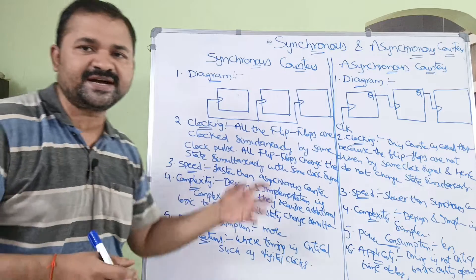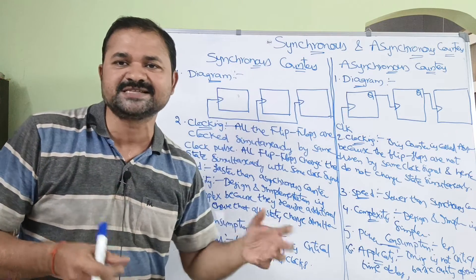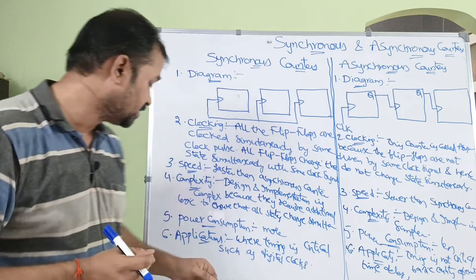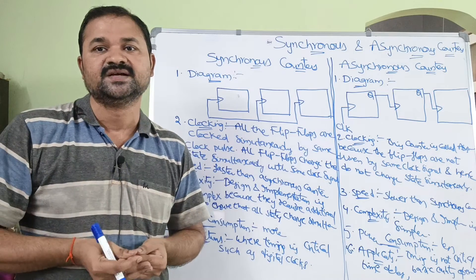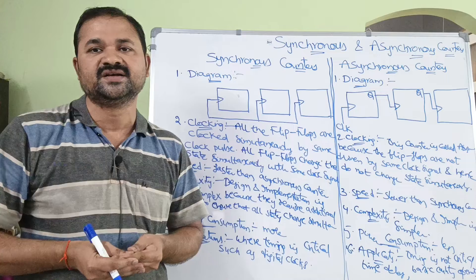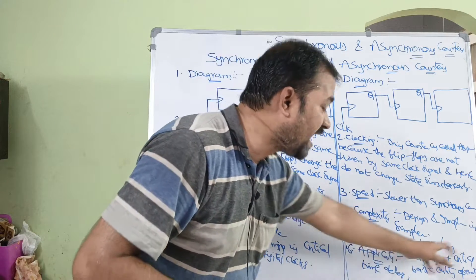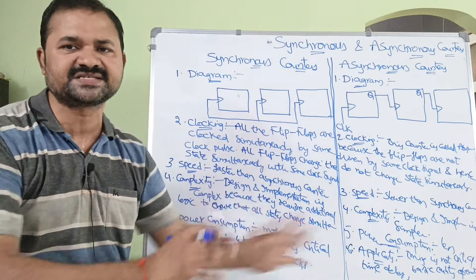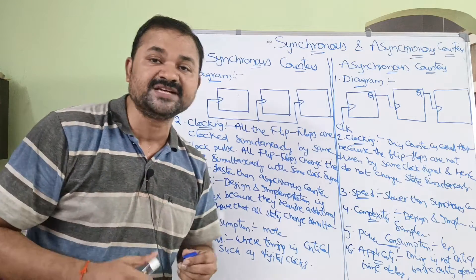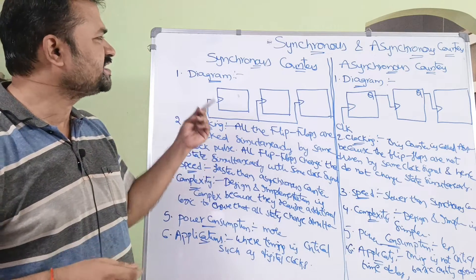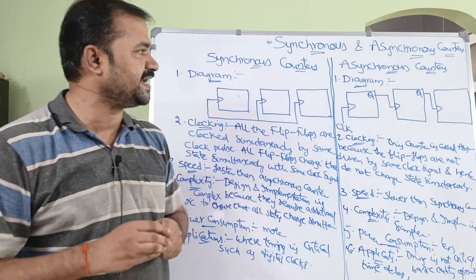The sixth difference is applications. Synchronous counters are mainly used in applications where timing is critical, because all flip-flops must change state simultaneously — such as digital clocks, microwave ovens, and washing machines. Asynchronous counters are used where timing is not critical and some delay is acceptable, such as in basic counting operations. This concludes the differences between synchronous and asynchronous counters; upcoming videos will cover several examples based on both.